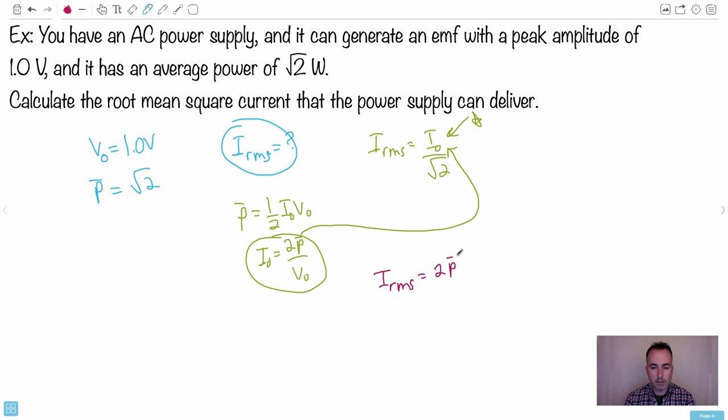But don't forget, we have to do I0 over square root of two. So I'll put a square root of two here. So far this is pretty good. Now we keep going, one more step. We just put in the numbers that we know.